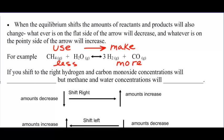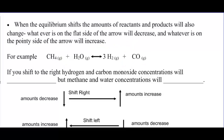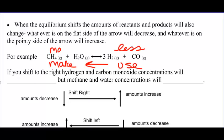So if the reaction shifts to the right, whatever you're pointing at you are making more of. If you shift right, you're going to use these to make these. Once equilibrium is reestablished, you will have more of what you make and less of what you use. If you were to shift left, then everything's backwards — you use the products, so there will be less of those, and you make the reactants, so there will be more of those.